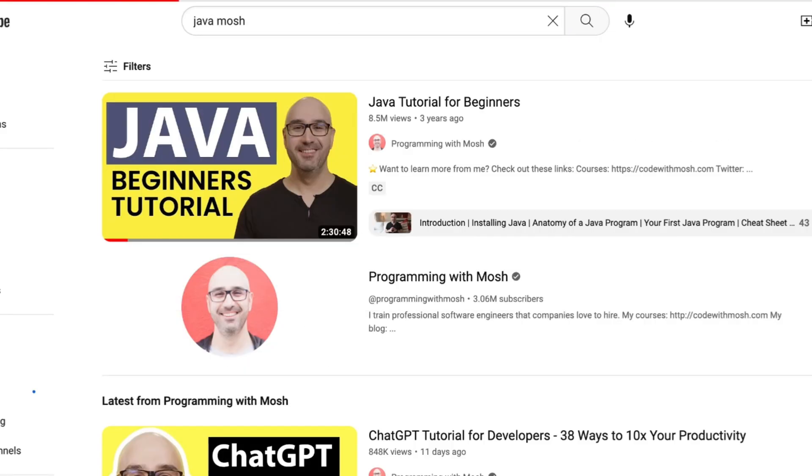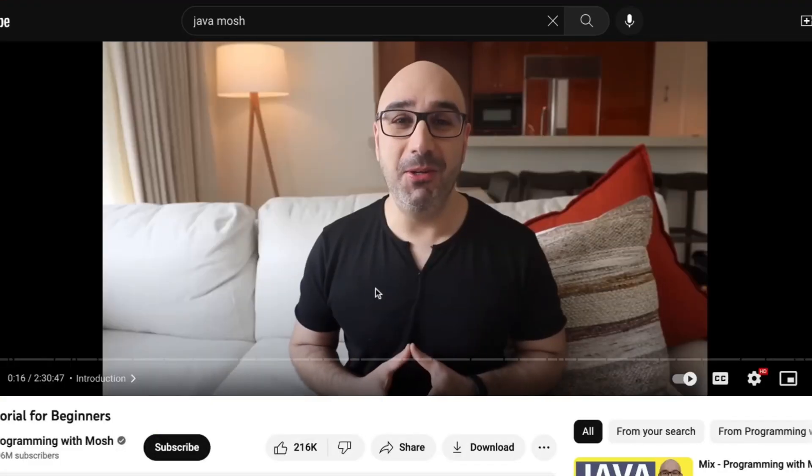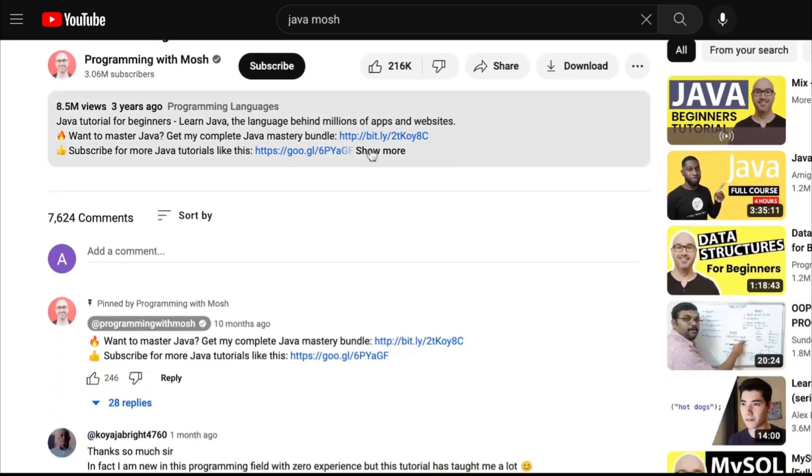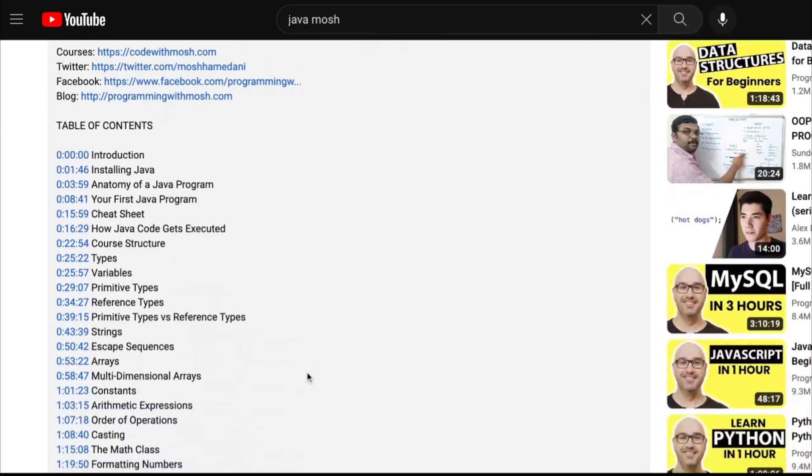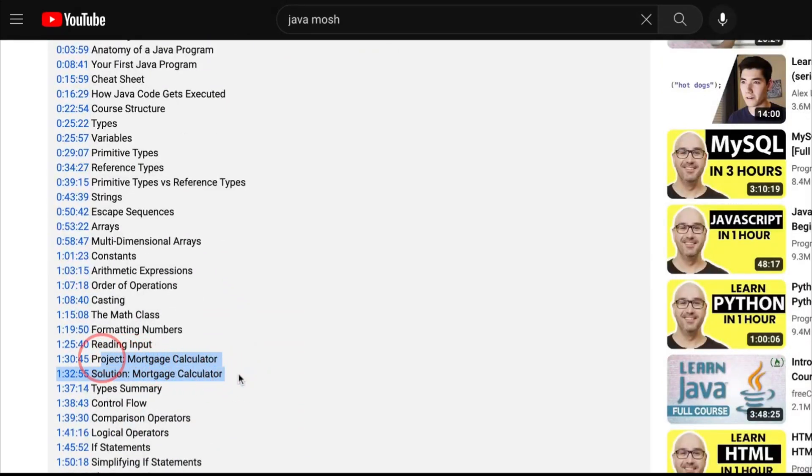The first resource is Java Tutorial for Beginners by Mosh. The first part is free on YouTube. In this 2.3 hour long free course you will learn enough Java to be called a Java beginner. It covers the most basic part of Java including variable types, arrays, conditionals, loops, and more. You will build a mortgage calculator at the end.